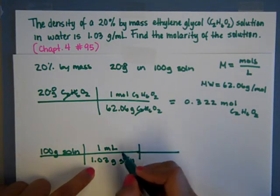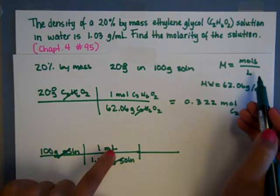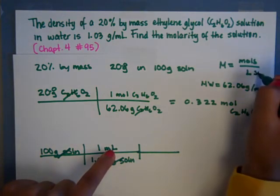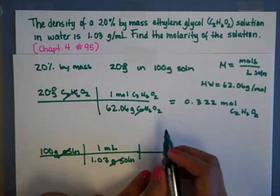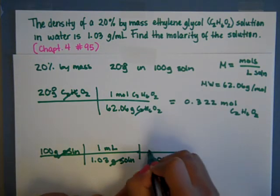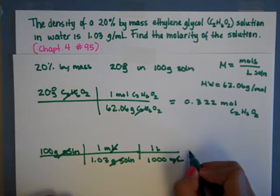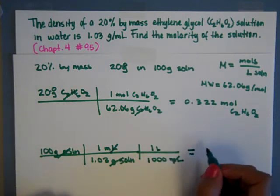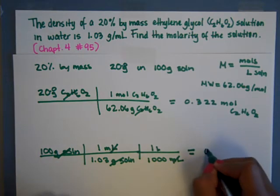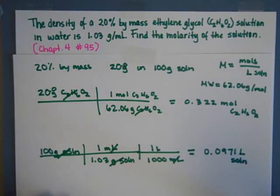Then we can continue on. So grams are canceled. We don't need milliliters, we need liters of solution. Remember, it's solution. So we need to put our conversion, the 1,000 milliliters in 1 liter. That got those to cancel. So after we calculate that out, we're going to find we have 0.0971 liters of solution.